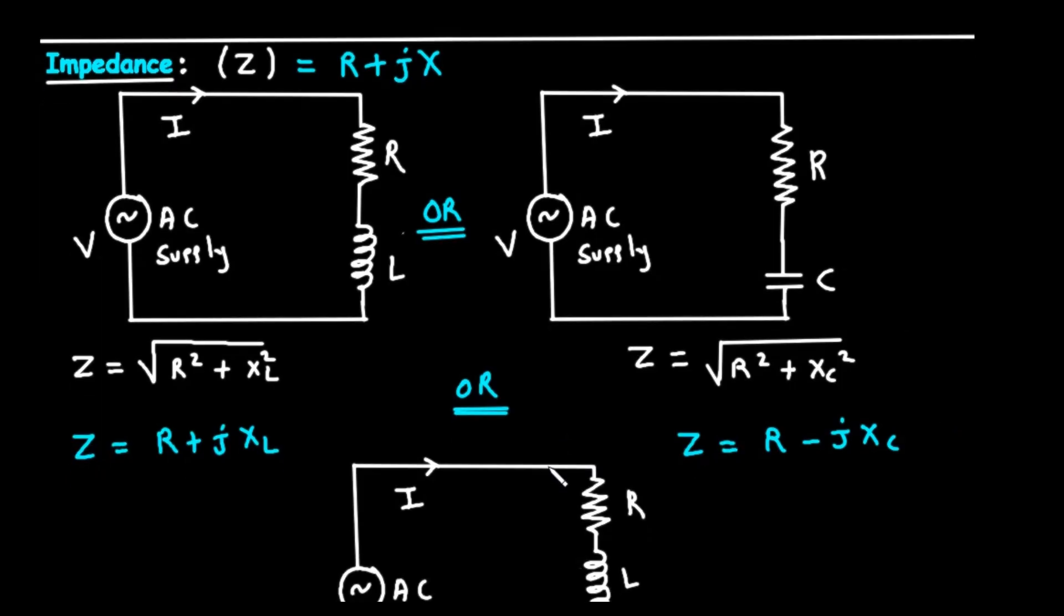Finally, let's bring it all together with our third concept: impedance, represented by the letter Z. Impedance is the total opposition to current flow in an AC circuit. It is the combination of both resistance and reactance. The general formula is written as Z equals R plus j times X.